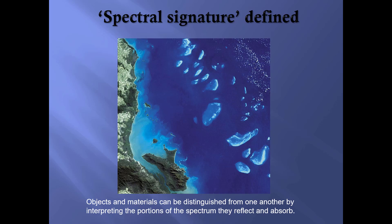Objects and materials can be distinguished from one another by interpreting the portions of the spectrum that they reflect and absorb. Here's a typical scene. Starting on the left, we can see urban areas, a coastline, shallow water and deep water, and clouds in the upper right. Shallow water or a sandbar will appear different than deep water, shown in blue, which will appear different than land. The urban and coastal area will also have a unique spectral signature.